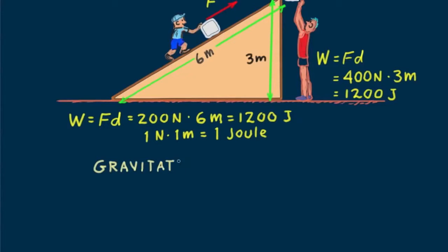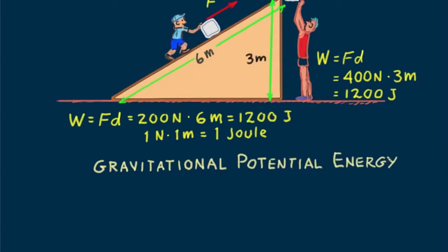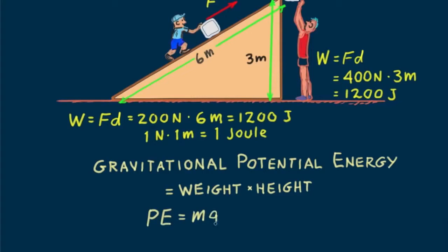We call this acquired energy gravitational potential energy. We define it as weight times height. If we express weight as mg and height as distance h, we say potential energy equals mgh.